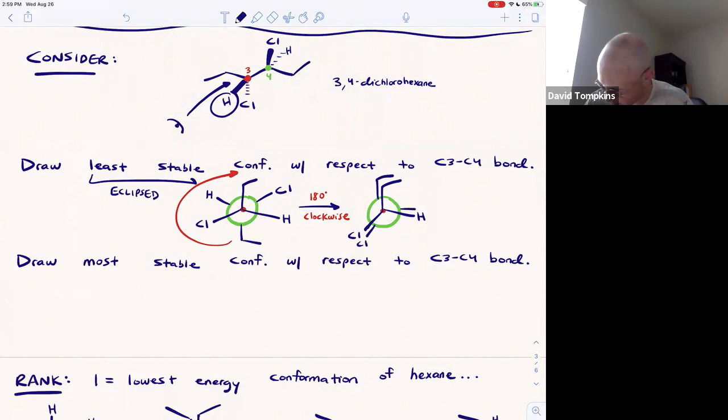The chlorines eclipsed, and the hydrogens eclipsed. This will be your highest energy conformation, where we have the maximum steric strain, because the large ethyl groups and the large chlorines are too close to one another in space, or closer than their van der Waals radii allow, and it's the maximum torsional strain, where all of those sigma bonds are parallel and eclipsed.